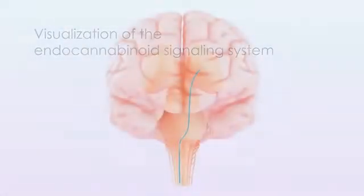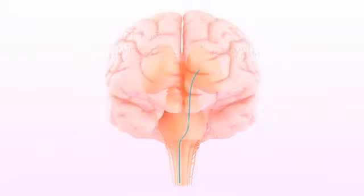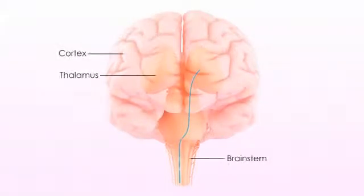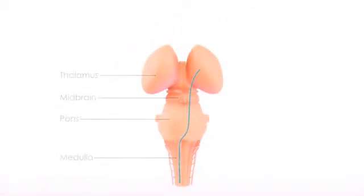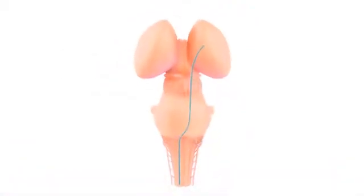In the normal transmission of pain, ascending nociceptive signals travel up the spinothalamic pathway to the thalamus, where they are processed and relayed to cortical and other areas.